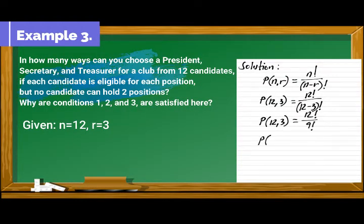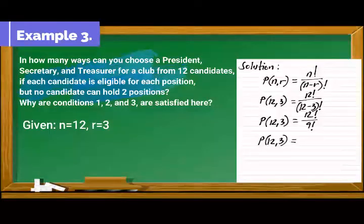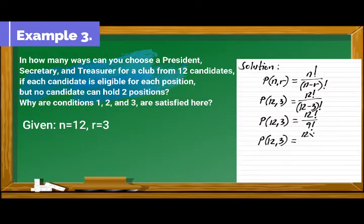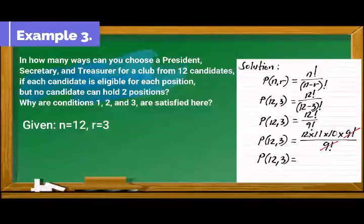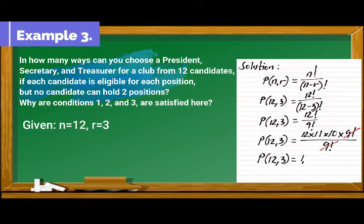Next, simplify 12 factorial over 9 factorial. And then, we can now divide out 9 factorial. And our answer will be 12 times 11 times 10. And that is 1,320.